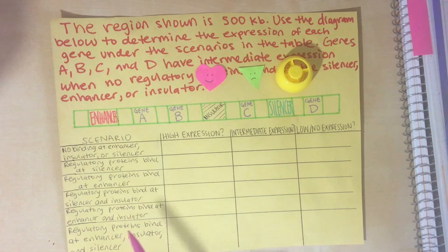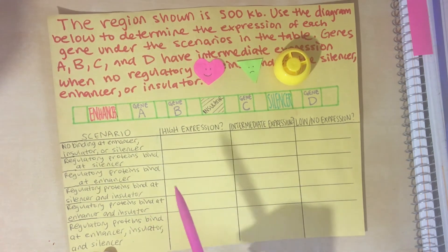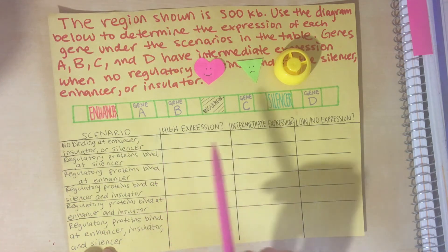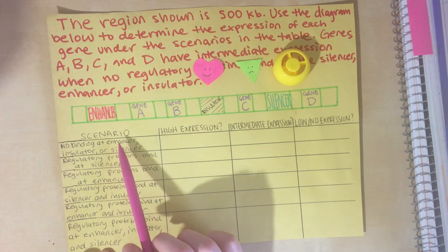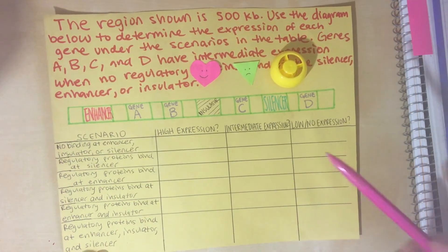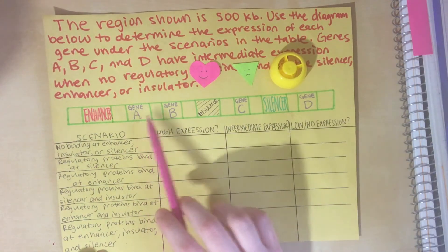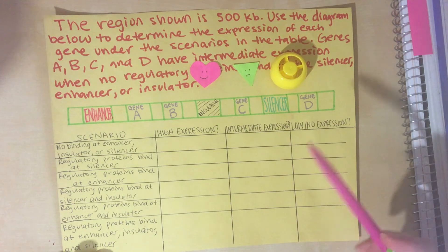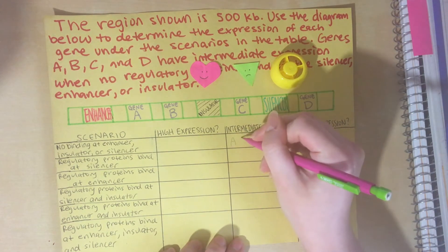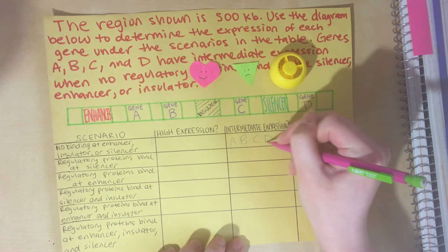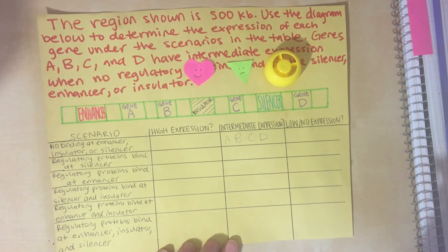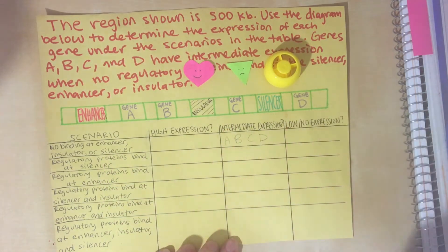There are six scenarios we'll be looking at. In the first, we're asked what kind of gene expression we'll have if there's no binding at the enhancer, insulator, or silencer. The question already stated that when there's no binding, genes A, B, C, and D will have intermediate expression — so genes A, B, C, and D will all have intermediate expression if there's no binding of any regulatory proteins.